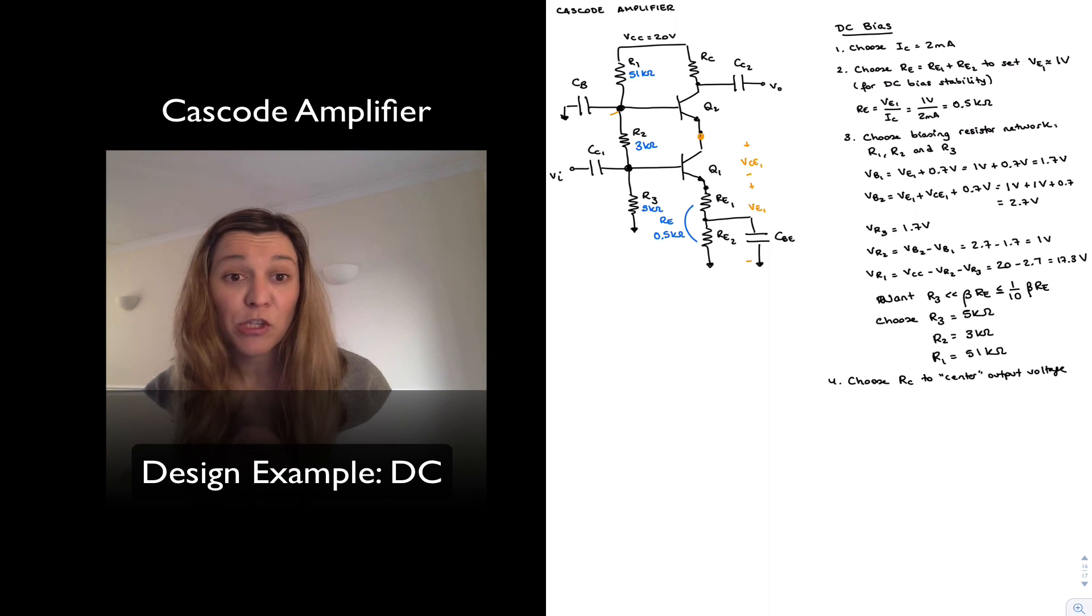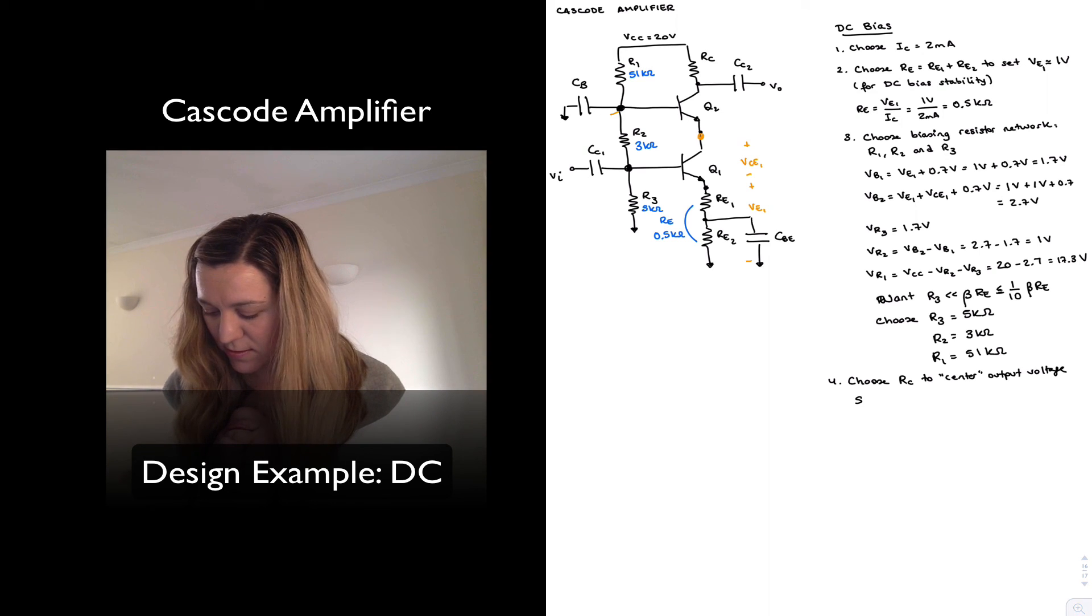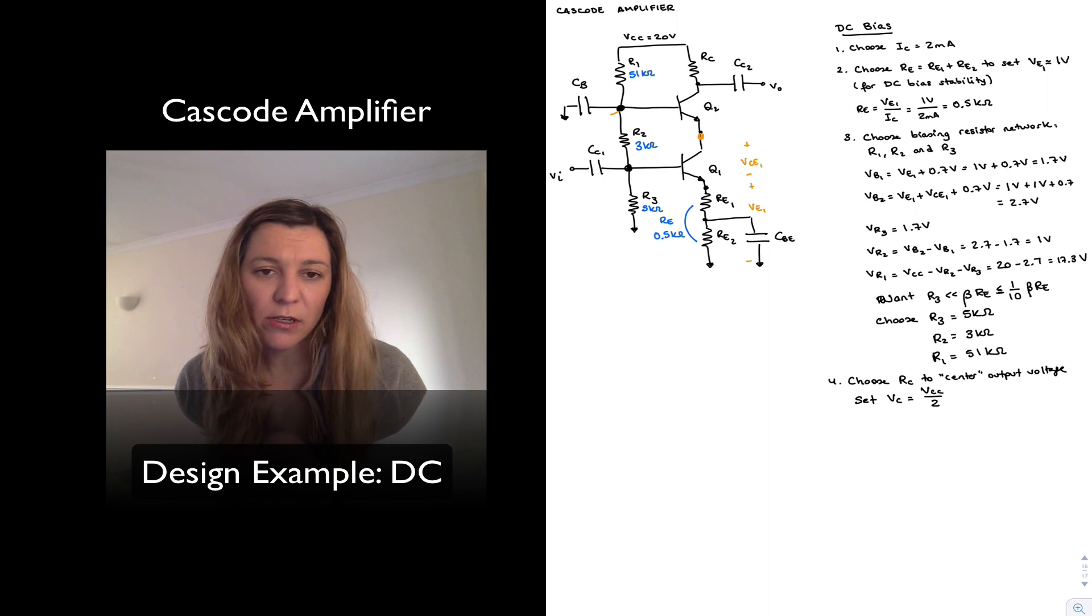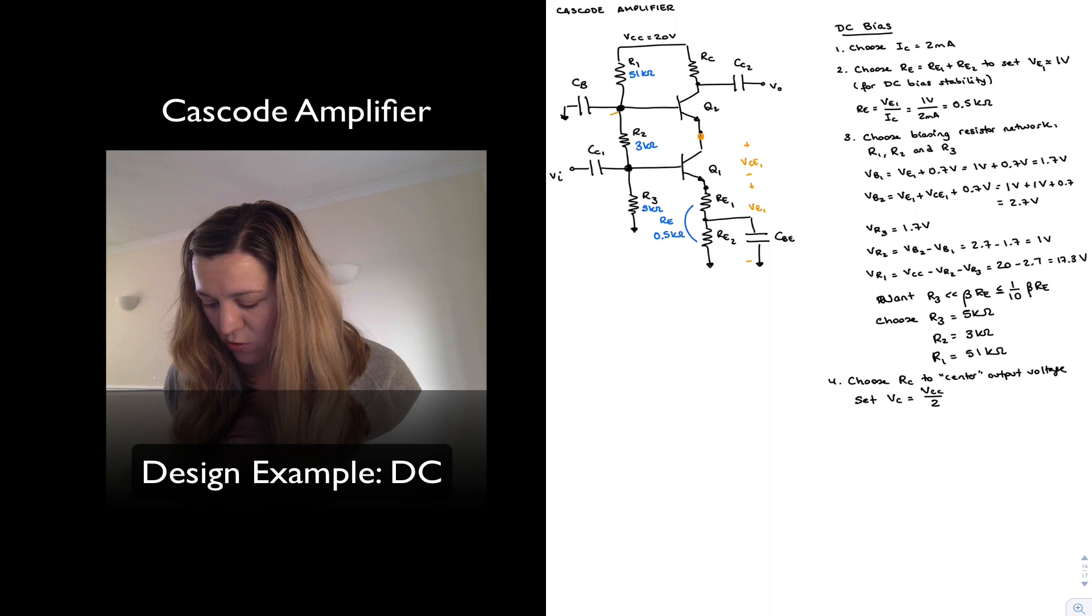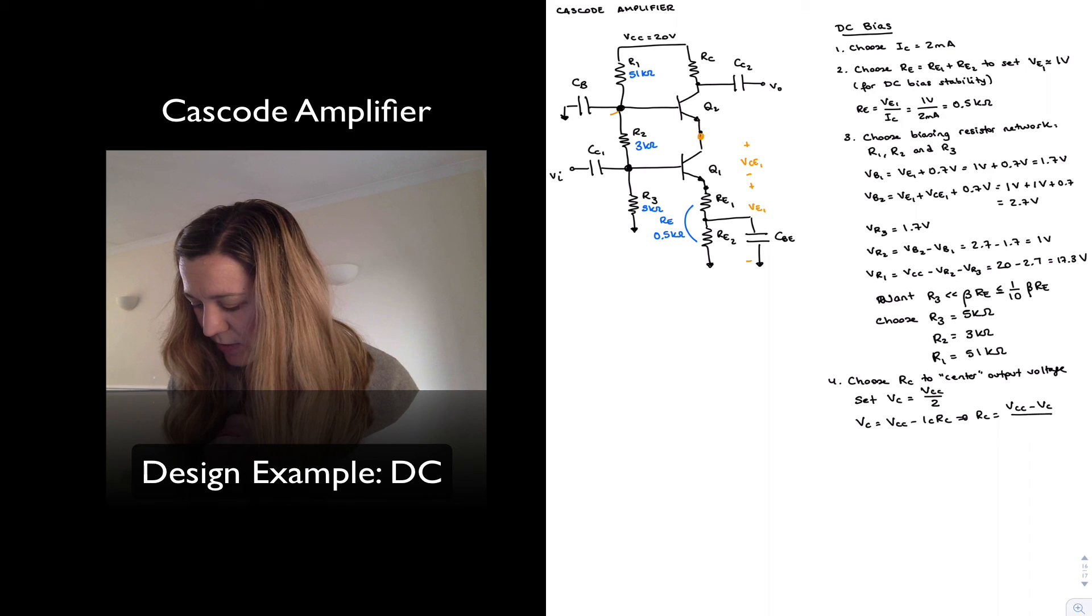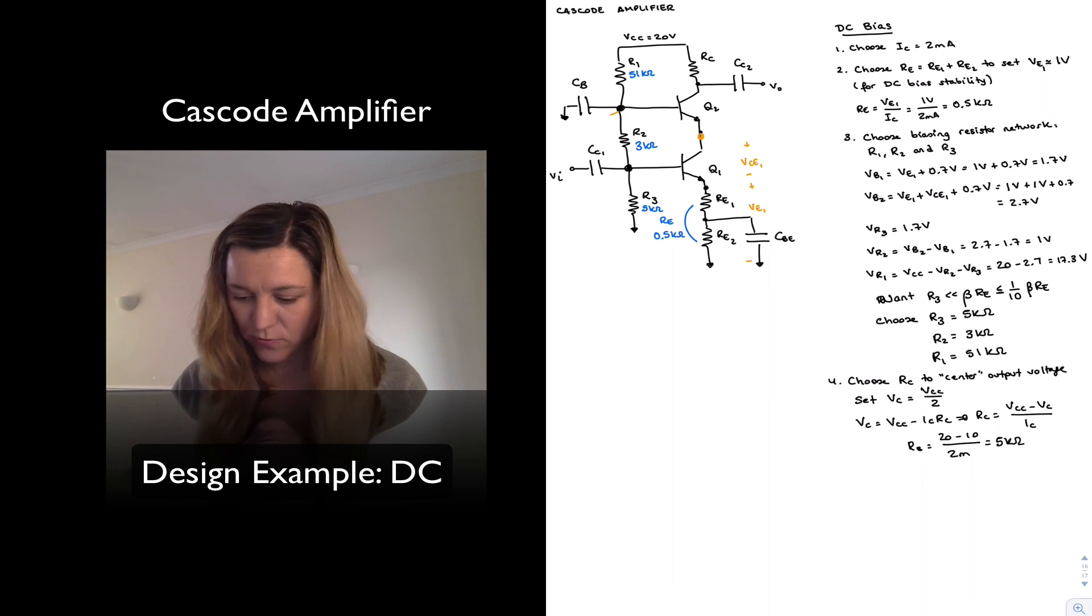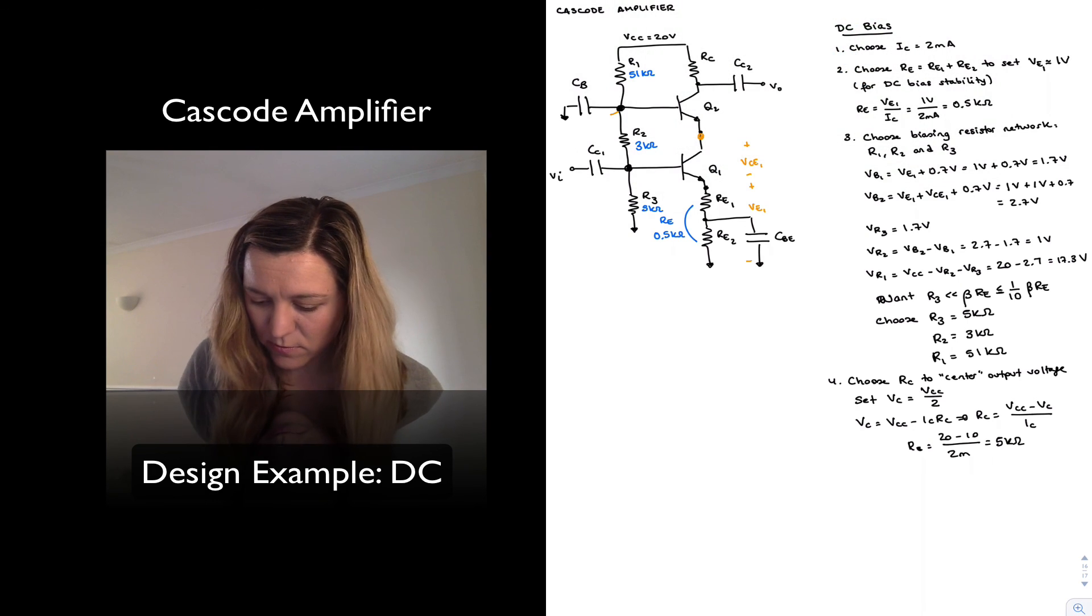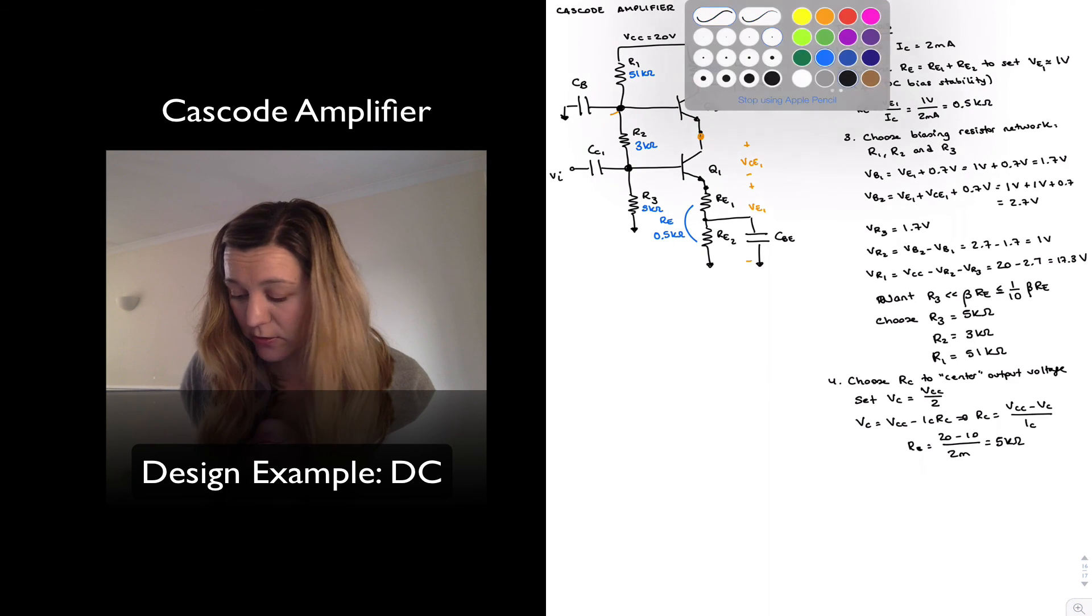I'm just going to make an approximation to keep my calculations simple. So I'm going to set VC equal to half of VCC. That won't give me maximum symmetrical output swing, but it will get me close. My VC is equal to VCC minus the voltage drop across RC. I can solve for RC and it will be VCC minus VC divided by IC, or 20 minus 10 divided by 2 milliamps, which is 5 kilo-ohms. So I can now enter my value for IC into the circuit. And that's it.